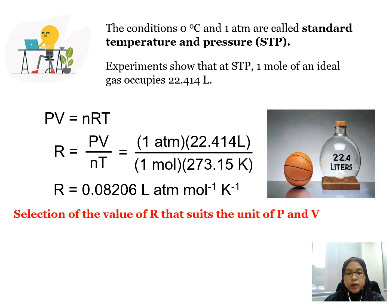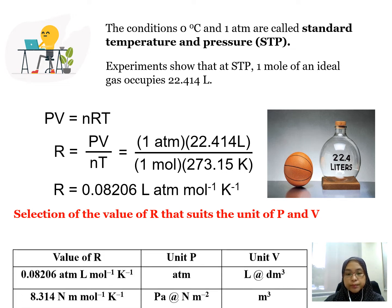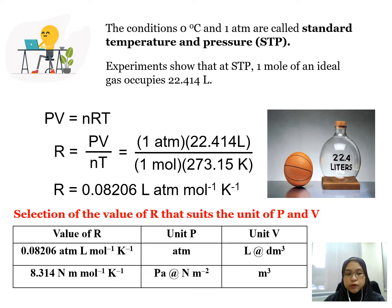The selection of the value of R must suit the units of pressure P and volume V. If we use R equals to 0.08206 atm litre per mol per kelvin, the unit of pressure must be in atm while volume must be in litre or dm³. If we use 8.314 N·m per mol per kelvin, pressure must be in pascal or N/m², and volume must be in m³. You can refer to the yellow page for the values of R, the gas constant.